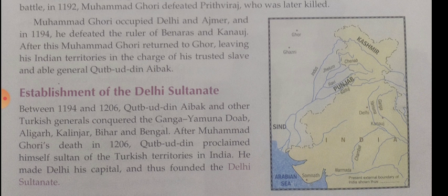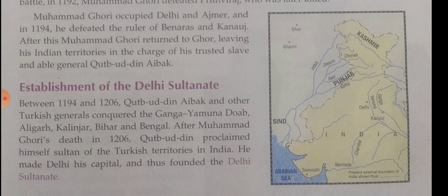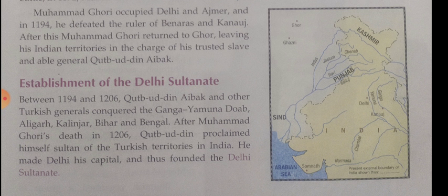Finally we discussed about the reasons for the decline of the Delhi Sultanate, which lasted for more than 300 years. The main reason was weak rulers. Then there were different kinds of invasions — the Timur invasion gave a lasting blow to the already weakened empire. At the same time, the inability of the Sultanate to maintain control over the southern provinces resulted in the establishment of the Vijayanagara and the Bhamani kingdoms.